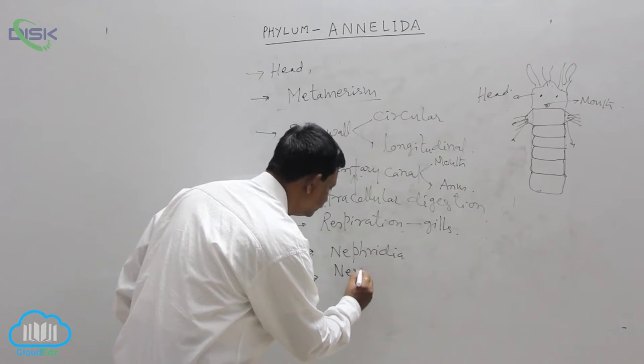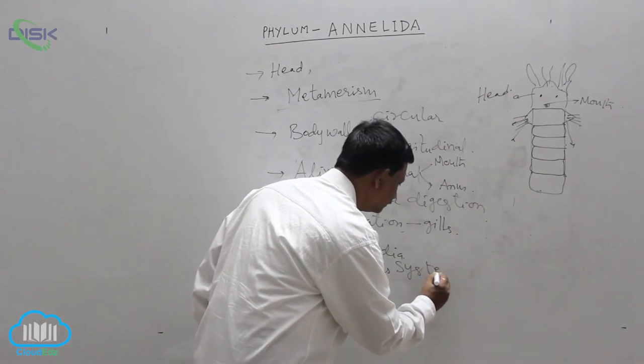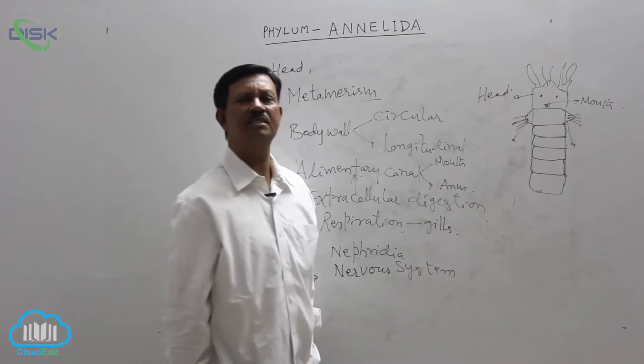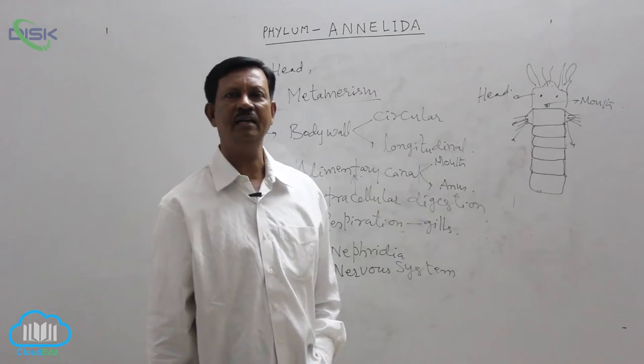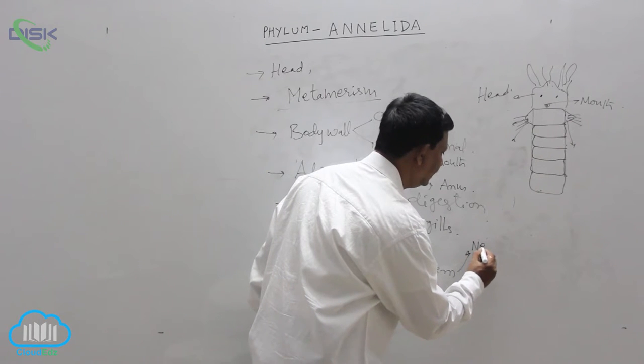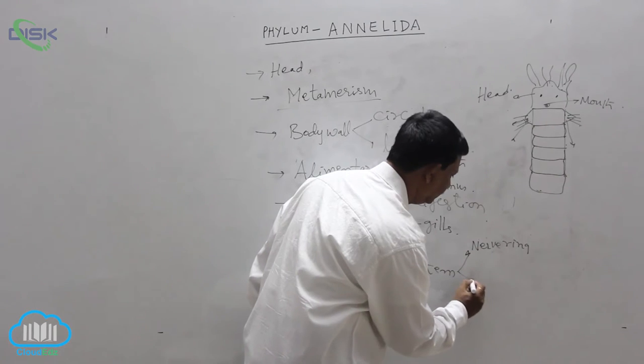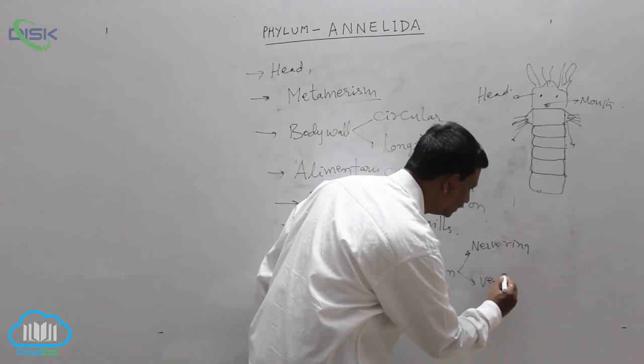Nervous system. Nervous system is well developed when compared to previous phyla. Nervous ring is present at the anterior end of the body and ventral nerve cord is present.